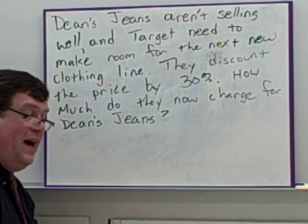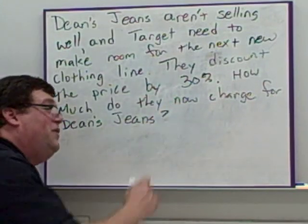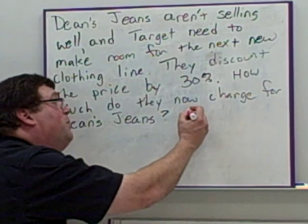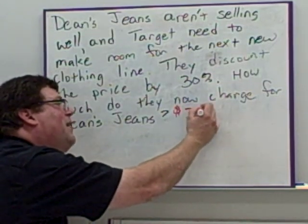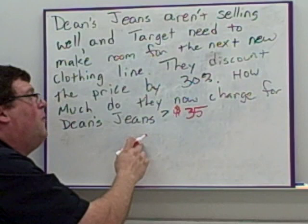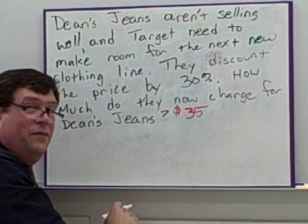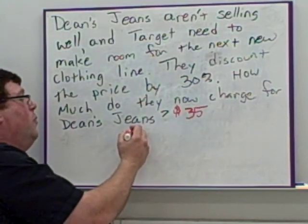To figure that out, I need to figure out what 30% of the price was. Now, the price before, remember, we said was $35. So we're looking for 30% of the 35. We do the part equals the percent times the whole.